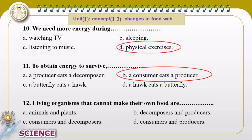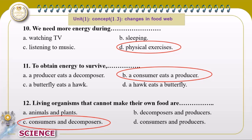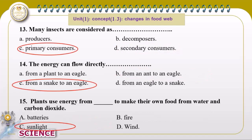Living organisms that can't make their own food — like animals — are consumers and decomposers. If a producer or plant appears in the choice, it is wrong. Many insects are considered primary consumers because they eat the producer.